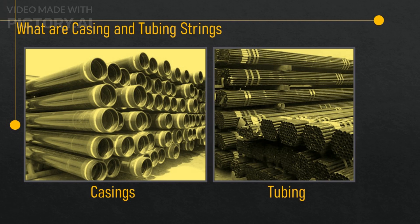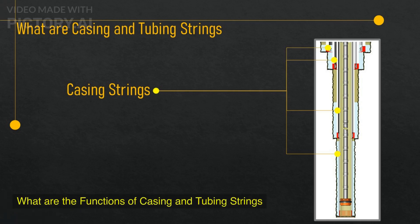The plain end weight is the weight per unit length of the tubing pipe without the threads and couplings, expressed in pounds per foot or kilograms per meter. The plain end weight is usually less than the threaded and coupled weight, which is the weight of the tubing pipe with the threads and couplings attached. Tubing is also classified by its API grade, which is similar to the casing grade but with different specifications and ranges. The API grade is usually marked on the tubing pipe along with the manufacturer's name, the plain end weight, and the ID.